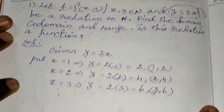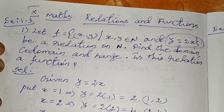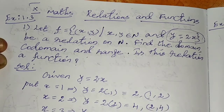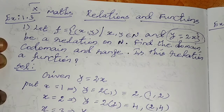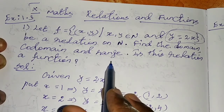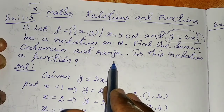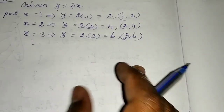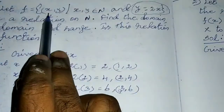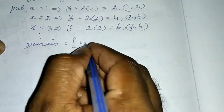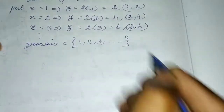Now let's answer the questions. The first question is: find the domain. In a relation between two sets, the first set is the domain and the second set is the range. Here, the first set is x, and x is all natural numbers. So domain = {1, 2, 3, 4, ...} — all natural numbers.